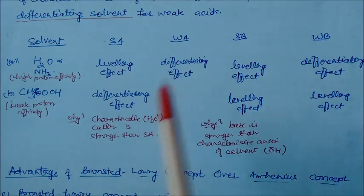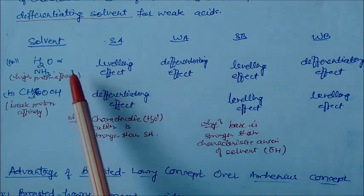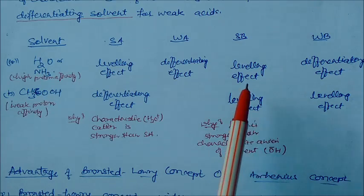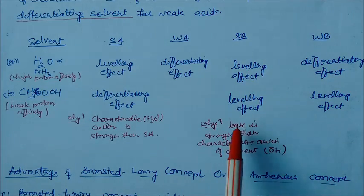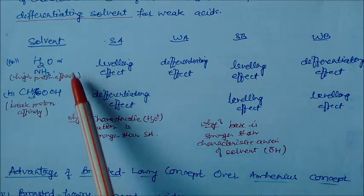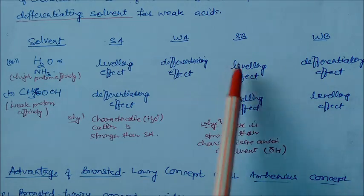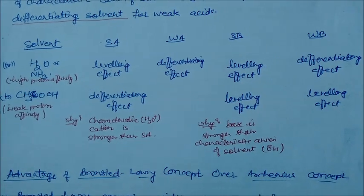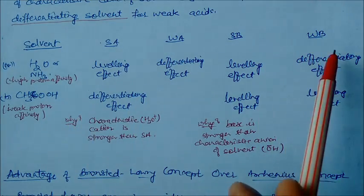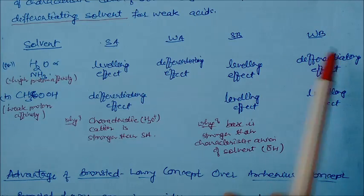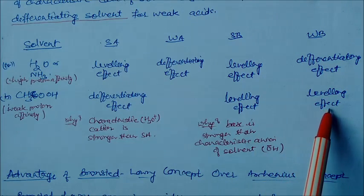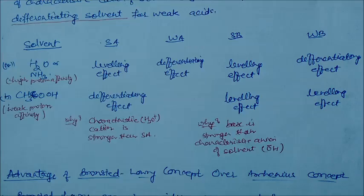Looking at the summary chart: in water or ammonia (high proton affinity solvents), strong acids show leveling effect, but in acetic acid they show differentiating effect. For weak acids in water, differentiating effect is observed. For strong bases in water or ammonia, leveling effect is shown; in acetic acid, strong bases also show leveling effect because the base is much stronger than the characteristic anion of the solvent. For weak bases in water or ammonia, differentiating effect is shown; but in acetic acid, all weak bases show leveling effect.